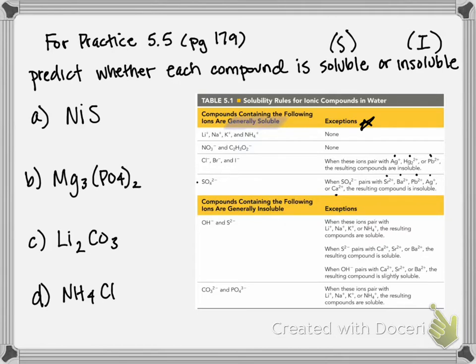The bottom part of the chart, on the other hand, these ions are generally considered to be insoluble in solution. Meaning if you have one of these in your compound, it's generally defaulted to being insoluble. So hydroxide, sulfide, carbonate, and phosphate are the four generally insoluble ions.